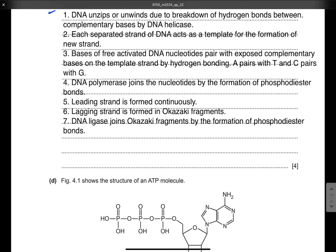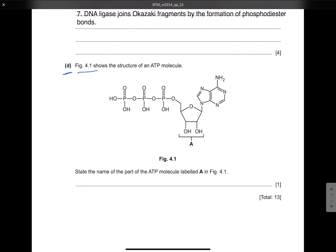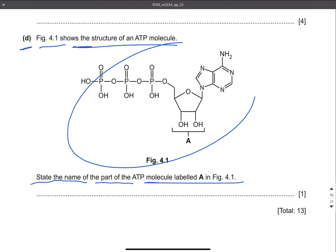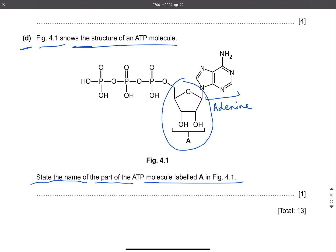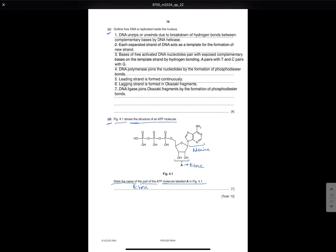Let's move on to part D. Figure 4.1 shows the structure of an ATP molecule. State the name of the part of the ATP molecule labeled A. The molecule has adenine, ribose sugar, and three phosphate groups. The part labeled A is ribose. Please remember you cannot write 'pentose' — you must write 'ribose' because they are asking the specific name, not the type of sugar.